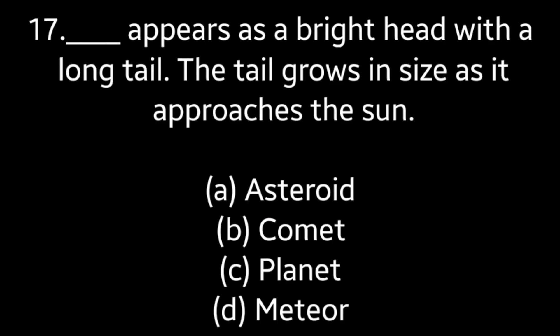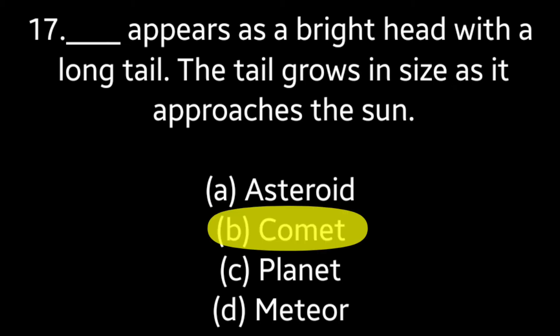Question number 17: Blank appears as a bright head with a long tail. The tail grows in size as it approaches the sun. Options: Asteroid, Comet, Planet, Meteor. The answer is option B — Comet.